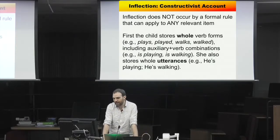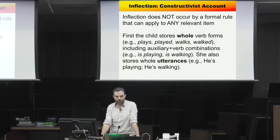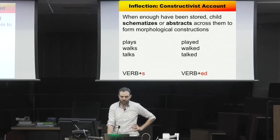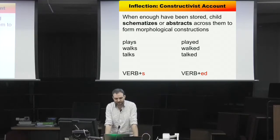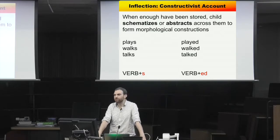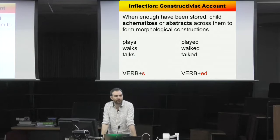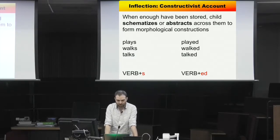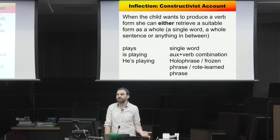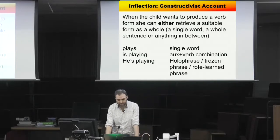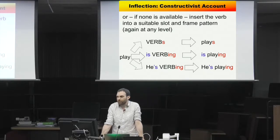The constructivist account offers a different story: the child first stores whole verb forms including auxiliary-verb combinations and even whole utterances. When the child has stored a few of these forms, they schematize across them into slot-and-frame patterns at the morphological level — a verb-plus-S pattern or a verb-plus-ED pattern. When producing a form, the child can retrieve an already-inflected form or slot the verb into an existing slot-and-frame pattern.